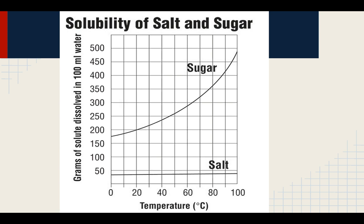Here's a solubility table for salt and sugar. As the temperature increases along the bottom, the solubility of sugar goes way up — meaning it breaks down way faster. Salt, on the other hand, does break down but not as much. Temperature doesn't affect salt as much. We can see salt stays at just under 50 grams of solute dissolved, going from about 45 up to about 47.